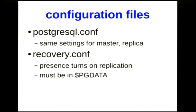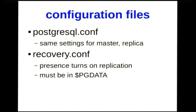recovery.conf has a weird hybrid role: it is both a trigger file that turns on replication and contains certain configuration options that can only appear in recovery.conf. If a recovery.conf file is present when you start up Postgres, that instance will attempt to go into replication or point-in-time recovery mode depending on what options you've given. This file always needs to go in the actual data directory even if your configuration is normally kept somewhere else. When you promote a replica to a master, Postgres moves that file.